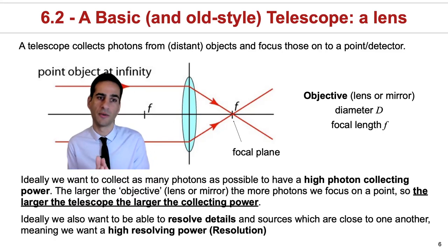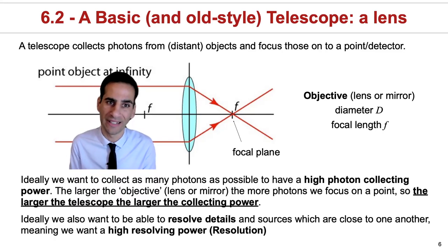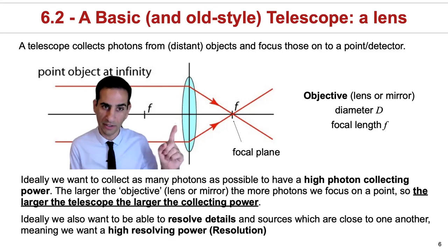Therefore, when you build a telescope, you typically want to try to collect as many photons as you can. You want the telescope to have some sort of high photon collecting power that will essentially depend on the collecting area.